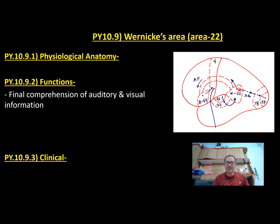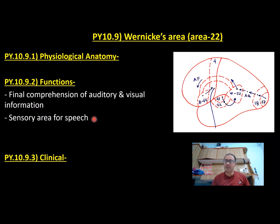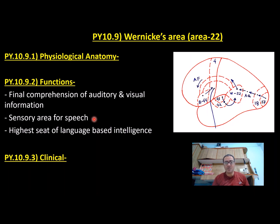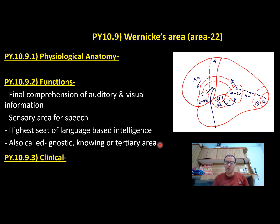The second function is that Wernicke's area is the sensory center or area for speech. Whatever we want to speak, Wernicke's area generates the thought and selects the word. That is why Wernicke's area is called the highest seat for language-based intelligence. The area is also called the gnostic area, or knowing area, or tertiary interpretation area.